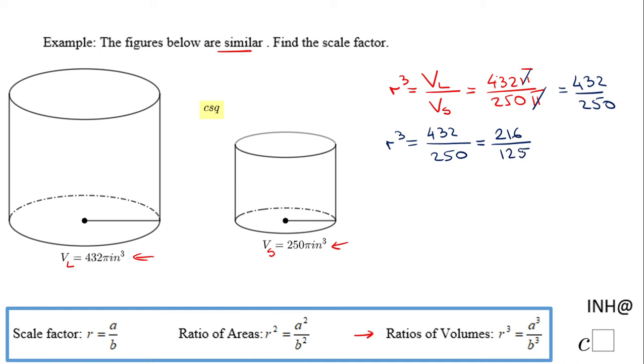At this moment if you notice, 216 is a perfect cube and 125 is a perfect cube. 6 to the third power is 216, and 5 to the third power is 125. So basically if I want to find r I'm going